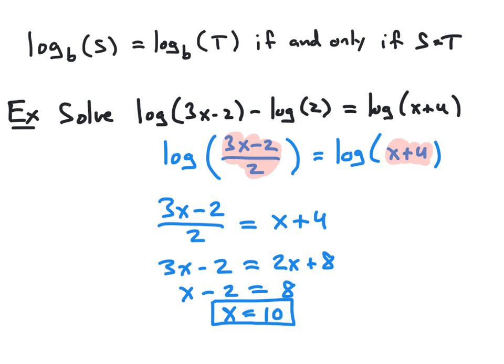So x equals 10 is our solution. Since this is a log equation, we do need to check that this solution makes sense. When we substitute x equals 10 into our first log expression, we get 3 times 10 minus 2, which is 28. And in our last expression, we get 10 plus 4, which is 14. Both of those are positive numbers, so we can conclude that 10 is indeed a solution because all expressions in the equation are defined.